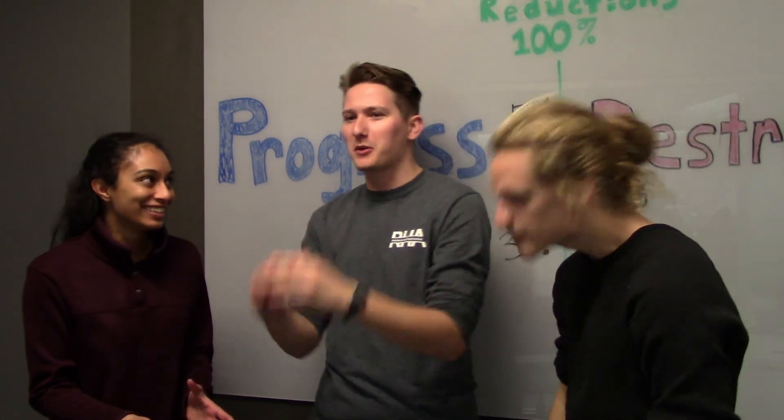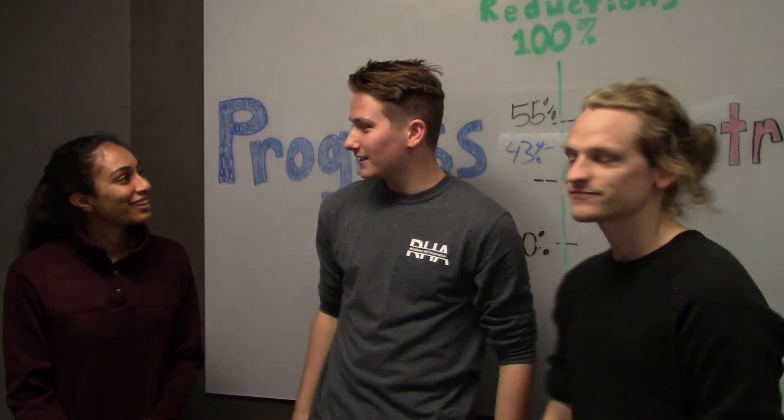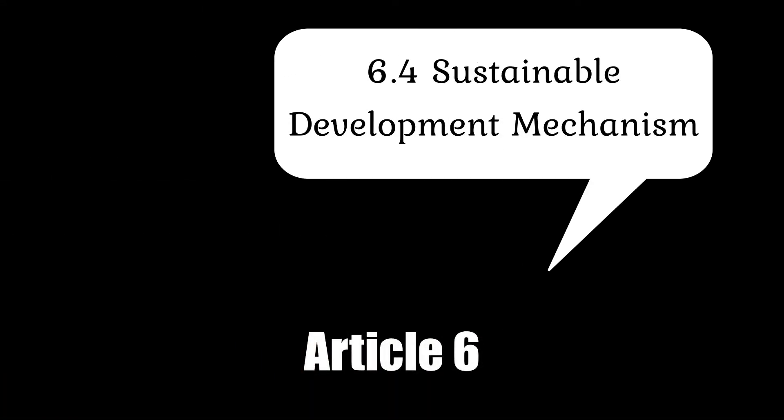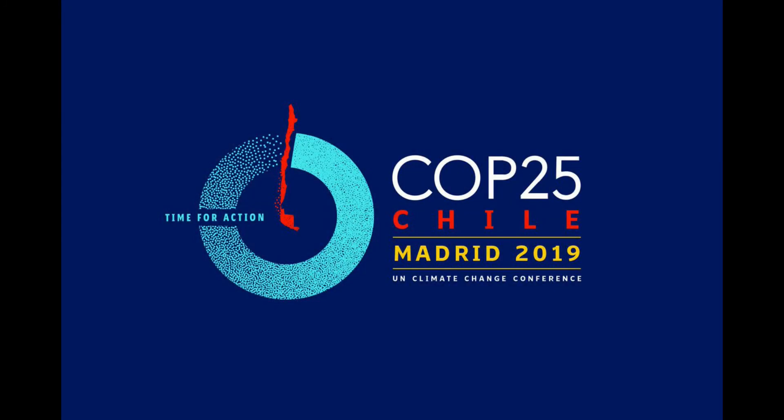As you can see, there's still a lot of controversy over Article 6, too. It was left ambiguous on purpose. Not to mention the rest of Article 6, which extends to the Sustainable Development Mechanism and Non-Market Mechanisms. The hope is that we can find the solutions to these questions and agree upon a framework for Article 6 at COP25.